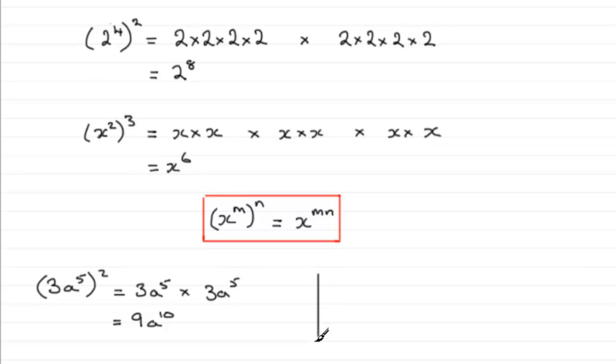And here's another example where we have other letters involved. Let's suppose we had 2a cubed b squared, and all of this result was cubed. What would our final result for this one be?